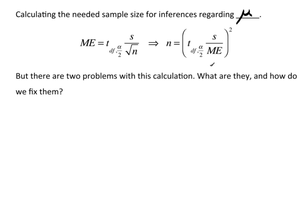Simply solve for n and this is what we get. Now there are a couple of problems in this calculation. There are two major problems. The first one is S. S is the sample standard deviation. So how can we have the sample standard deviation if we don't have data yet?